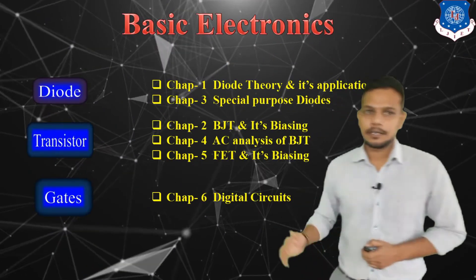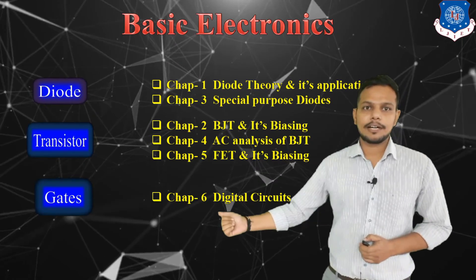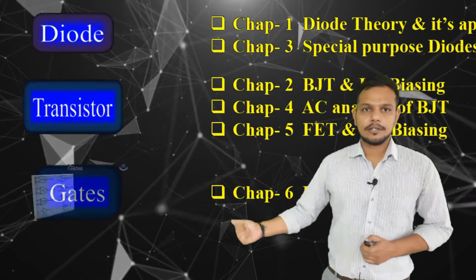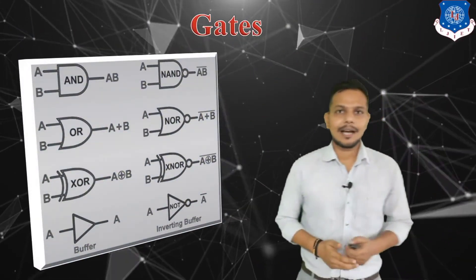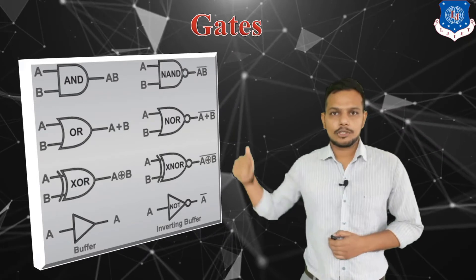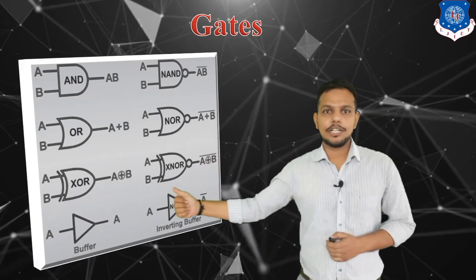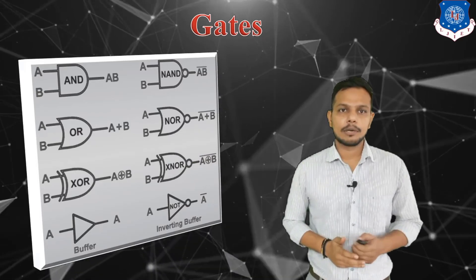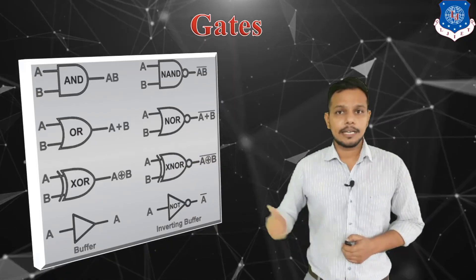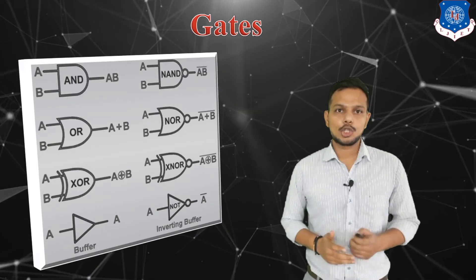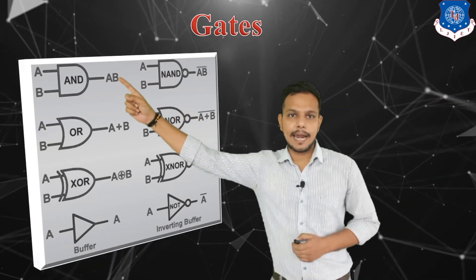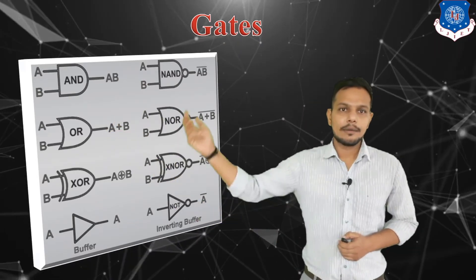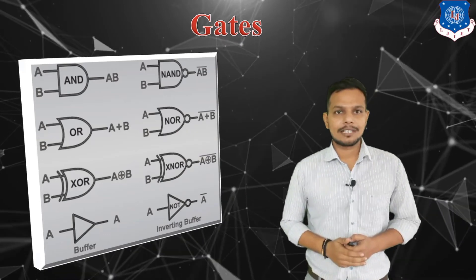Next is gates. Chapter number six is known as digital circuits. Gates are classified into three types: number one is basic gates, number two is universal gates, and number three is derived gates. In basic gates, there are three types: number one is AND gate, number two is OR gate, and number three is NOT gate. These are the basic gates.